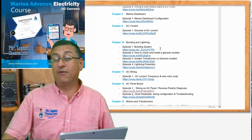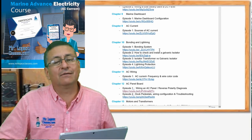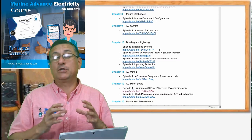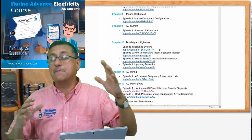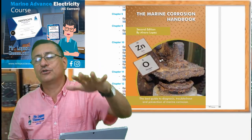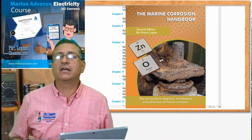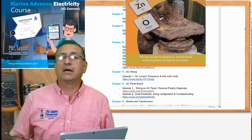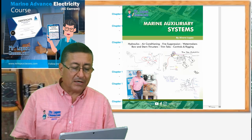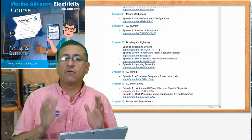In chapter number ten we have four episodes because it's bonding and lighting. This is one of the chapters that we are going to revisit in other books — in the book of corrosion we are going to use a lot of concepts related with the bonding system, and also in diesel and auxiliary systems. This chapter is a great chapter composed by four episodes.